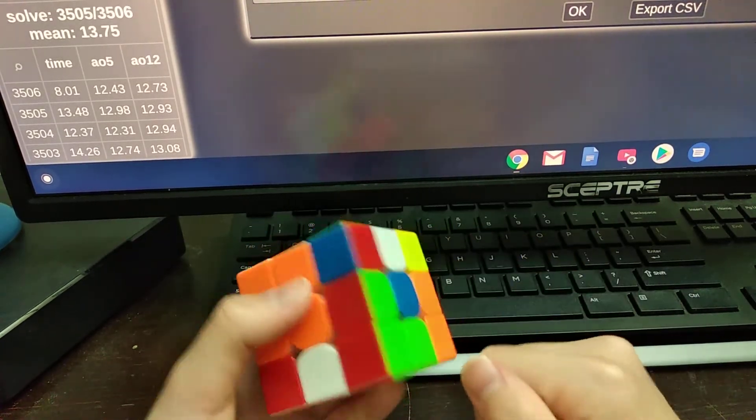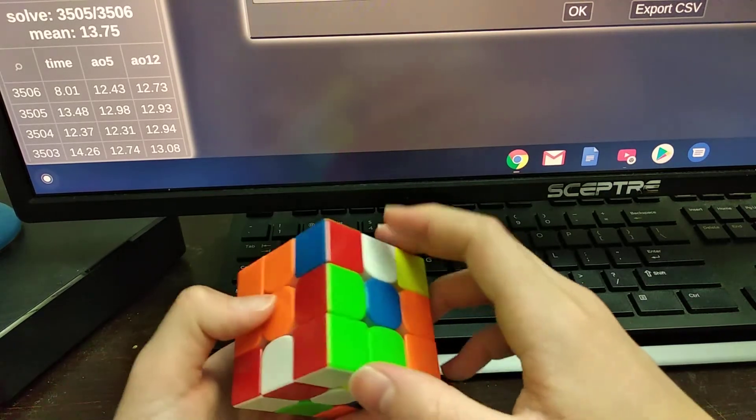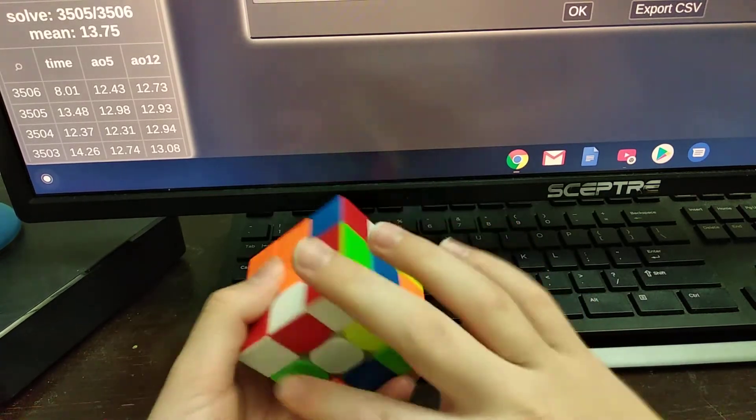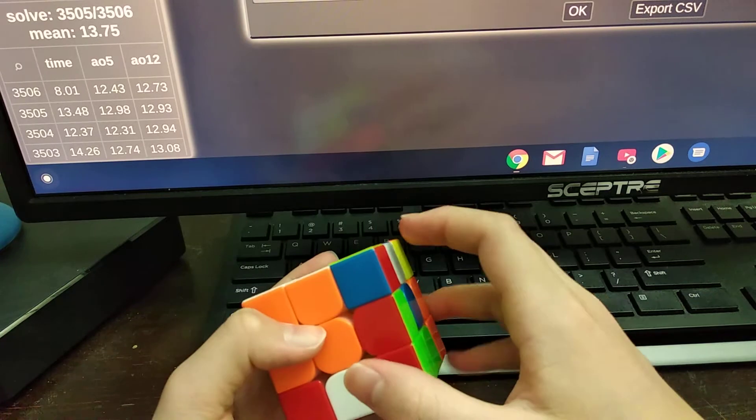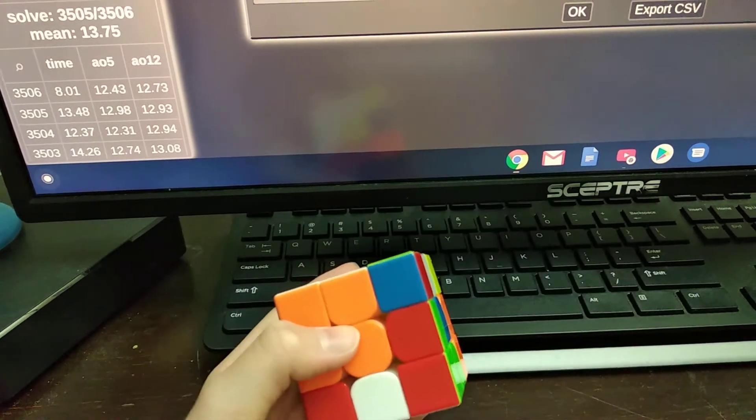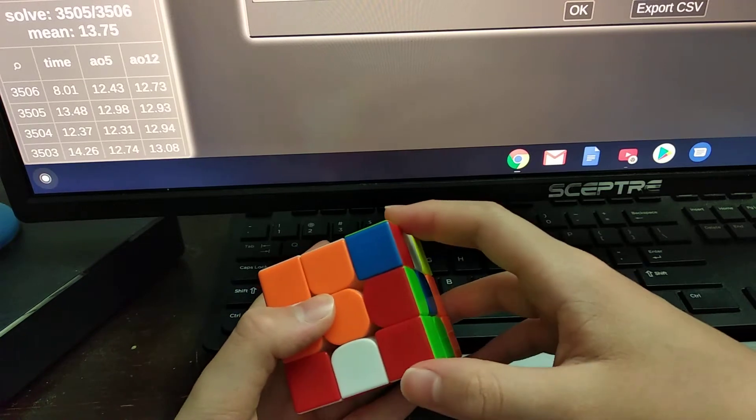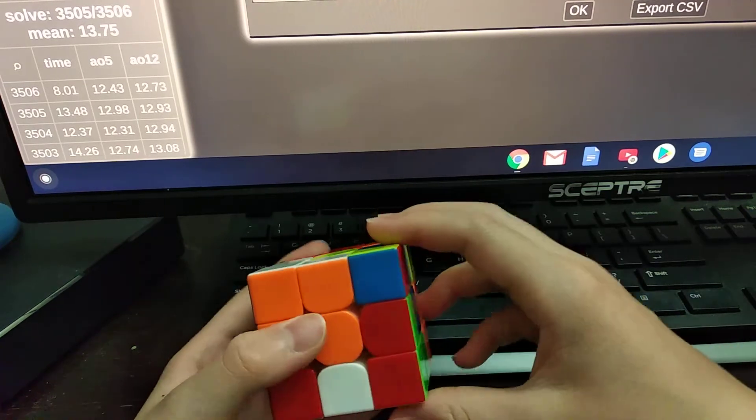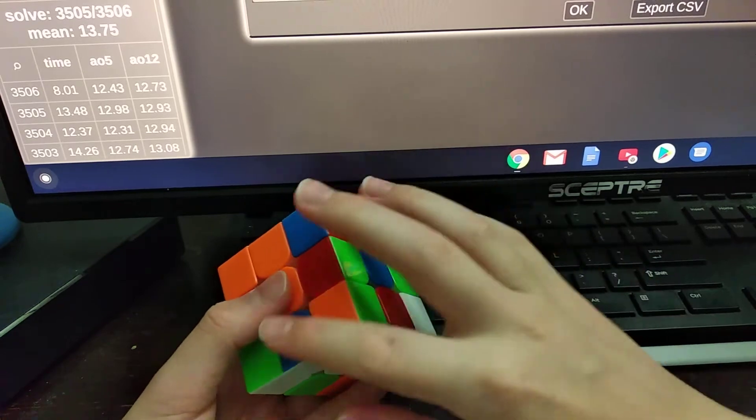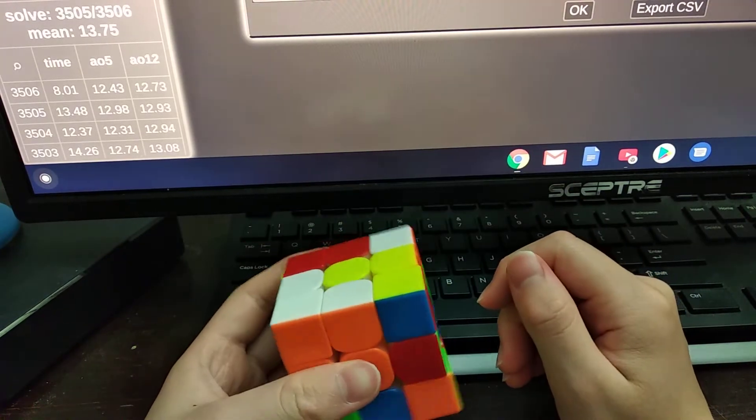So what I did was I inserted blue and red - and by the way we're doing the white cross - I inserted blue and red relative to each other with F' R' F, and then D to align them. So F' R' F aligns them together, then D.